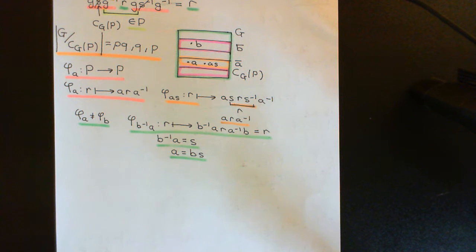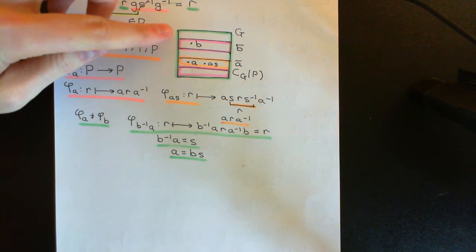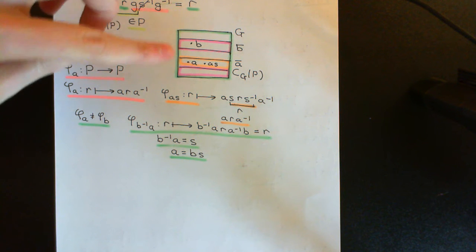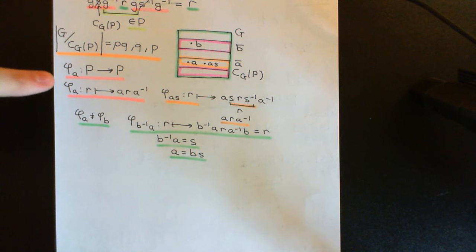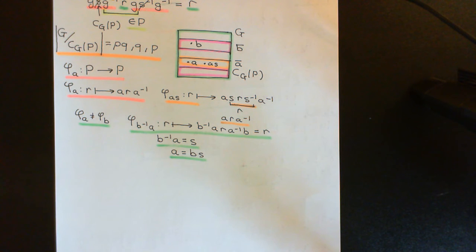So we now have this understanding of the cosets of the centraliser of P in G. All elements in a coset of the centraliser of P in G, when used to conjugate capital P, represent the same automorphism of capital P. What I now want to show is that composition in this quotient group respects composition of the conjugation maps — these automorphisms of capital P — and therefore this quotient group is going to be isomorphic to a subgroup of the automorphism group of P.